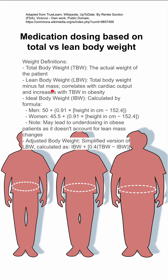Your adjusted body weight is a simplified version of the lean body weight, calculated with this formula here.